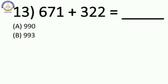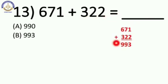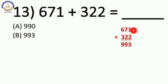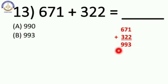Now next: 671 plus 322 is equal to blank. Do the addition: 1 plus 2 is equal to 3, 7 plus 2 is equal to 9, and 6 plus 3 is also 9. So our answer is 993. That is option number B.